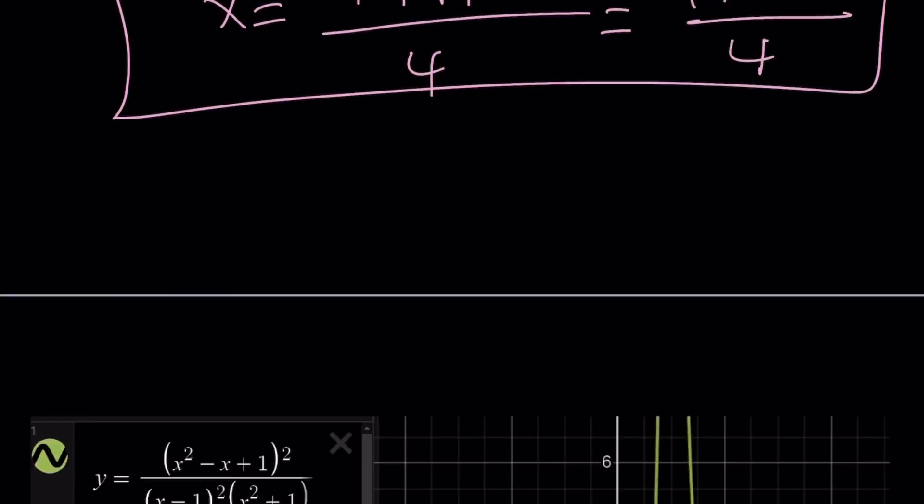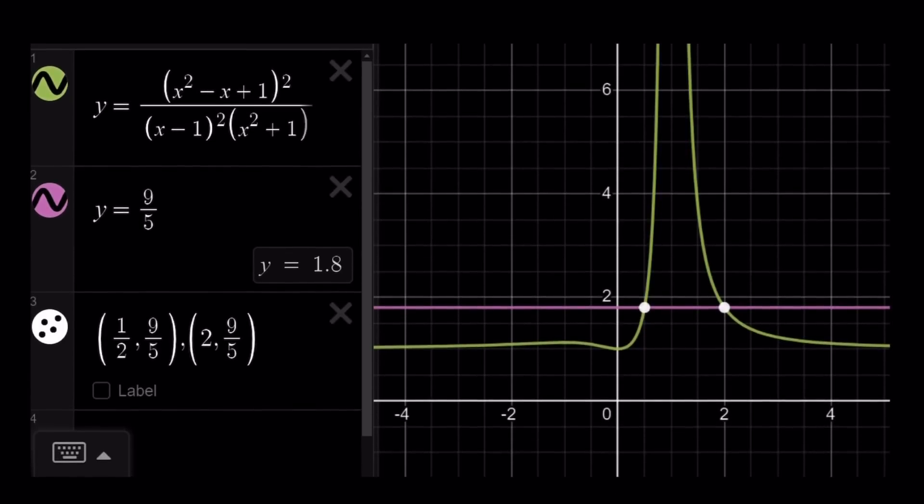This brings us to the graph, not to the end of this video yet. So bear with me for another maybe 30 seconds. So this is the graph of our function, and notice that y equals 9 fifths is being intersected at two points, because there are two real solutions. Remember, two and one half are those. We talked about it, right? The others are complex.